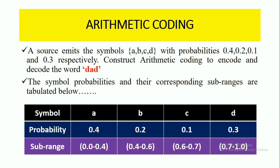A source emits the symbols A, B, C, D with the probabilities 0.4, 0.2, 0.1, and 0.3 respectively. We need to construct arithmetic coding to encode and decode the word DAD. So for this word DAD, we have to encode and decode by using arithmetic coding.